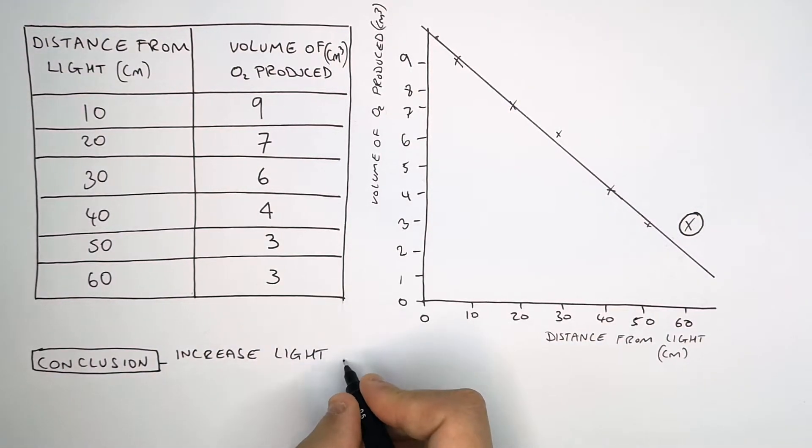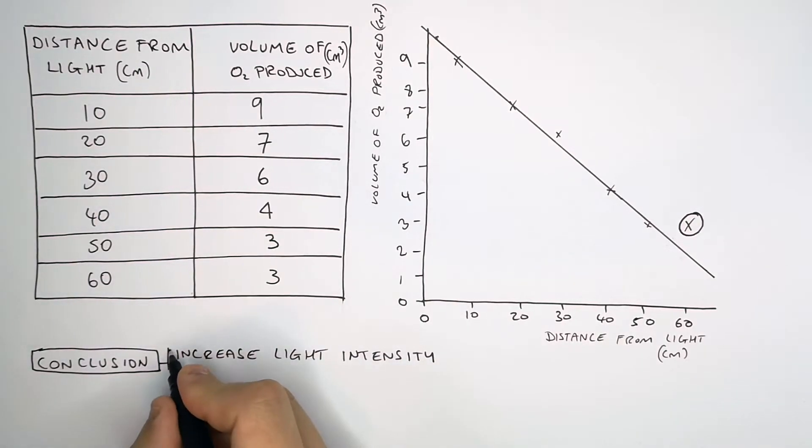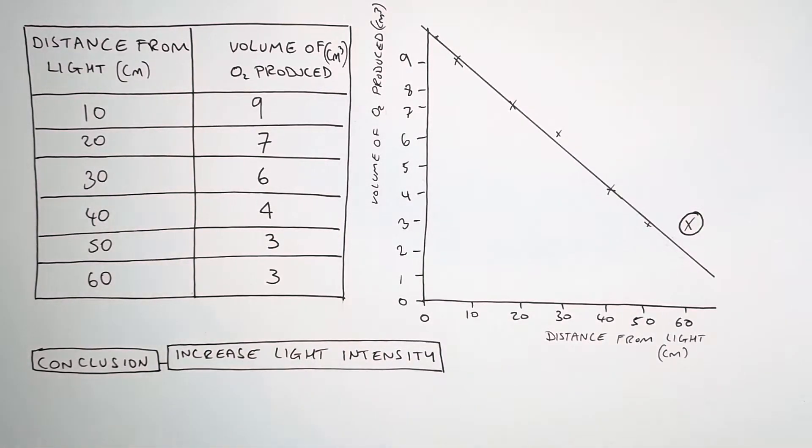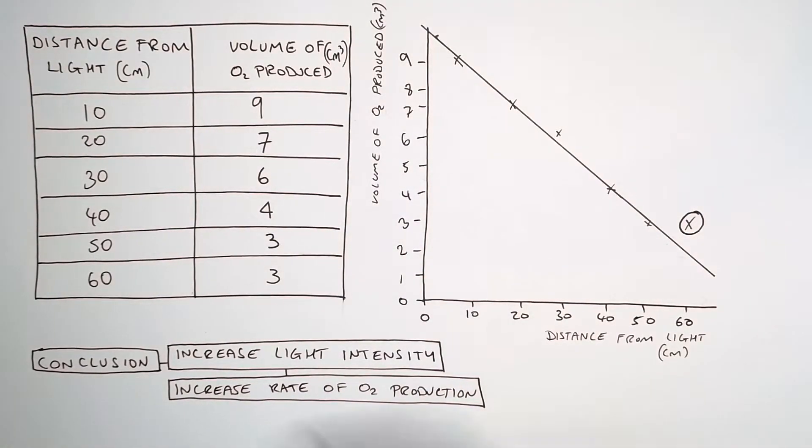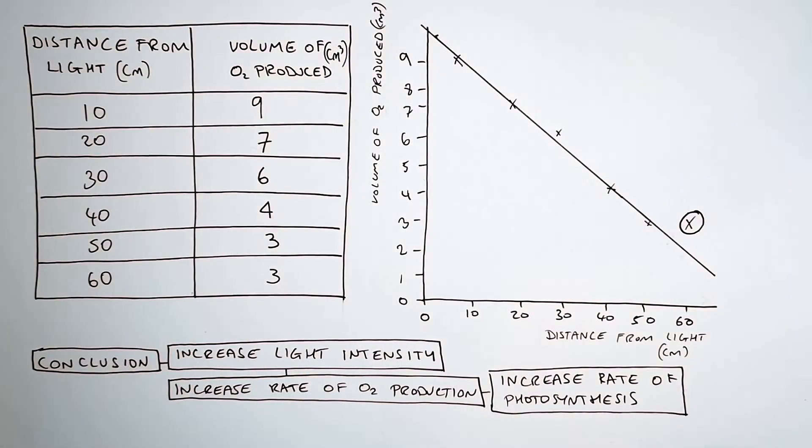If you increase the light intensity, you increase the volume of oxygen produced by the plant by photosynthesis. So therefore, there is an increased rate of photosynthesis. So the closer the plant is to the light source, the more oxygen is being produced by the plant. Therefore, we can say that the closer the light source to the plant, the faster the rate of photosynthesis.